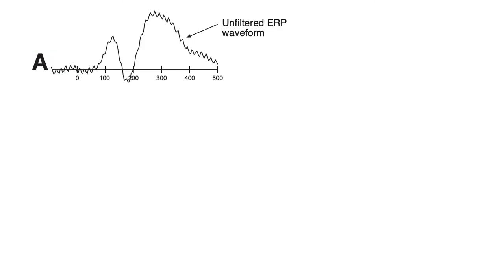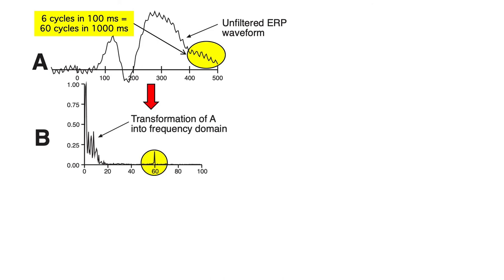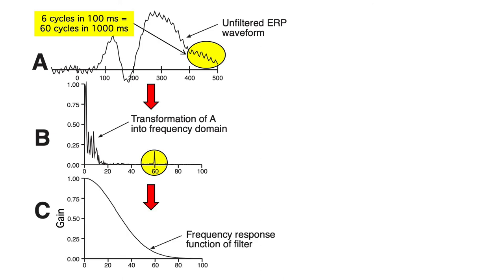Here's an ERP waveform that's contaminated with 60Hz noise. If you counted, you'd see 6 peaks in a 100ms period, which means that there are 60 cycles per second. Our first step in filtering is to use Fourier analysis to transform the waveform into the frequency domain. You can see the high level of 60Hz activity in the transform. Now, here's our frequency response function.